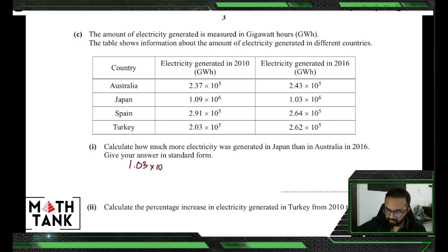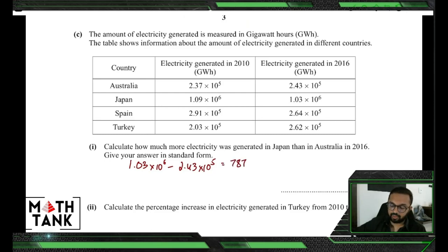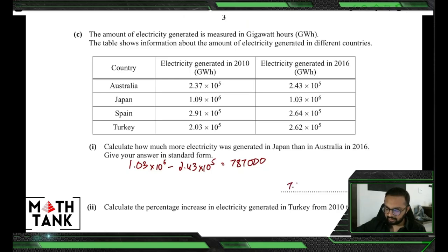So it's 1.03 into 10 to the power 6 minus 2.43 into 10 to the power 5. I don't need to do anything manually — just get the final answer. Your calculator is also capable of doing standard form for you. This gives 787,000, and converting to standard form: move the decimal back to get 7.87 with five zeros, so 7.87 into 10 to the power 5.